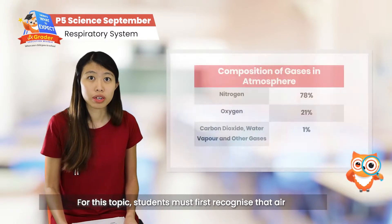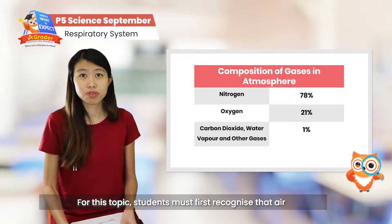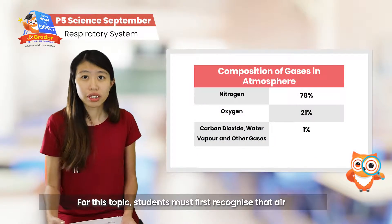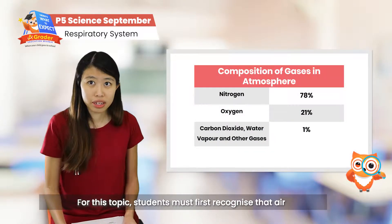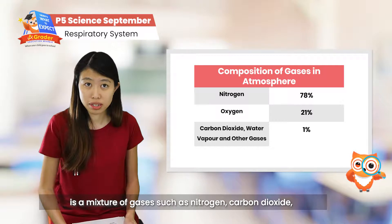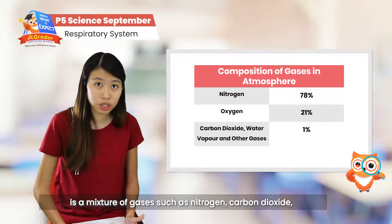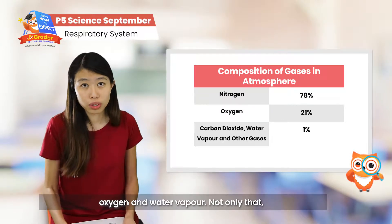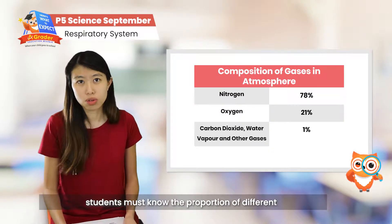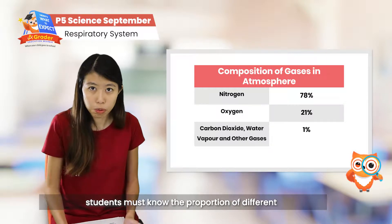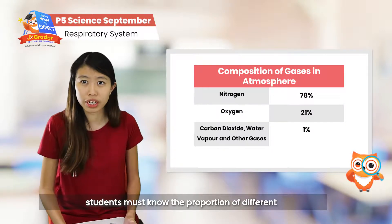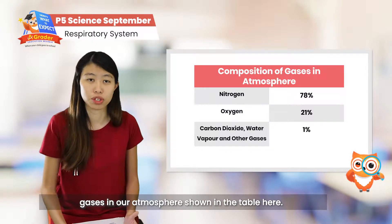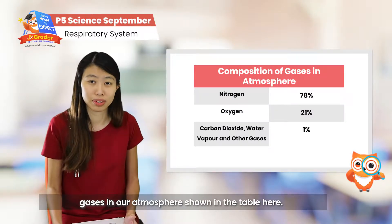For this topic, students must firstly recognise that air is a mixture of gases such as nitrogen, carbon dioxide, oxygen, and water vapour. Not only that, students also have to know the proportion of different gases in our atmosphere, as shown in the table here.